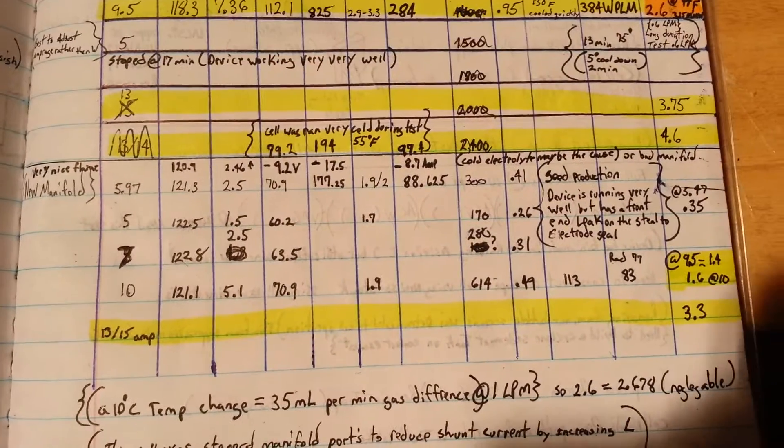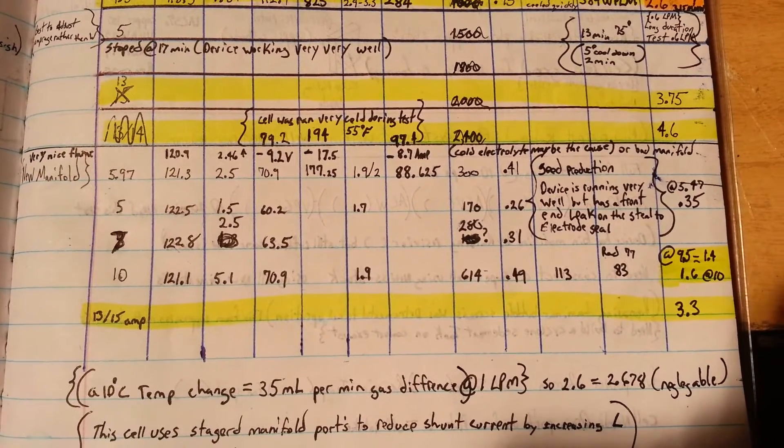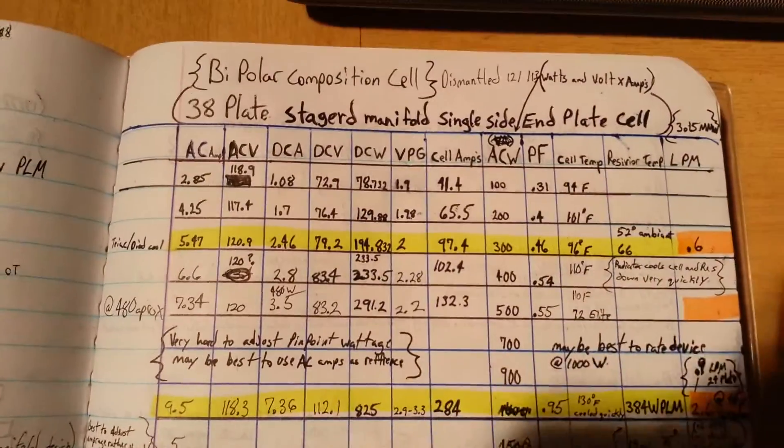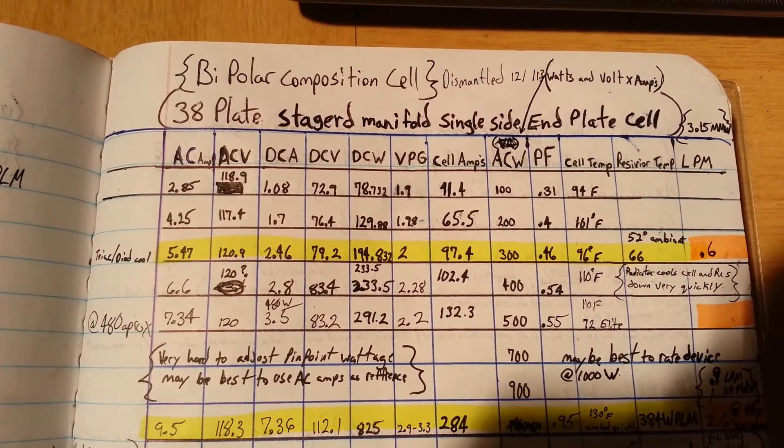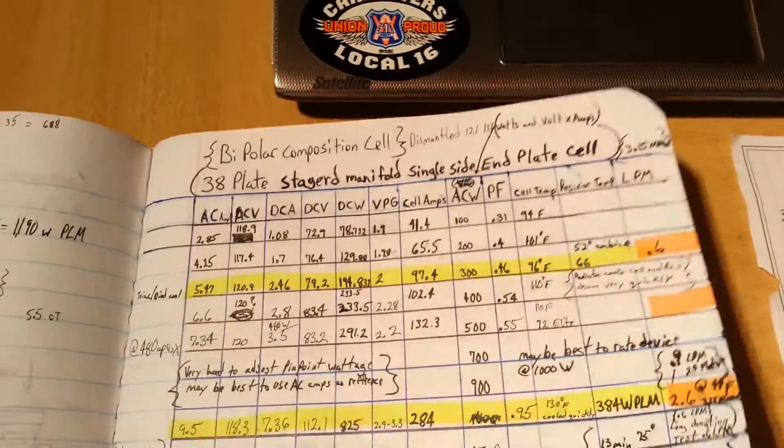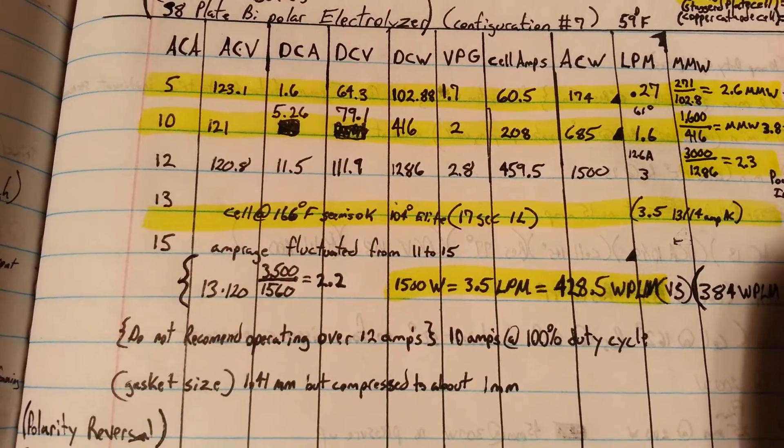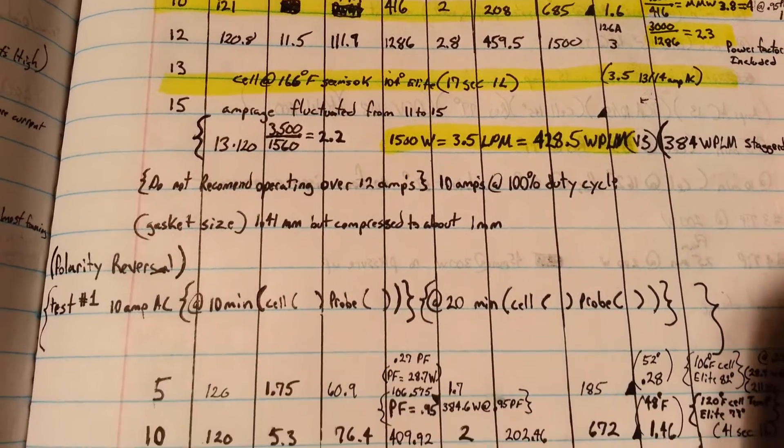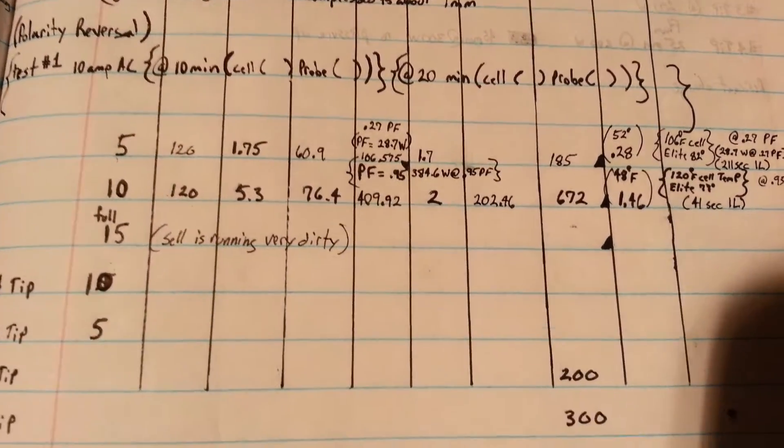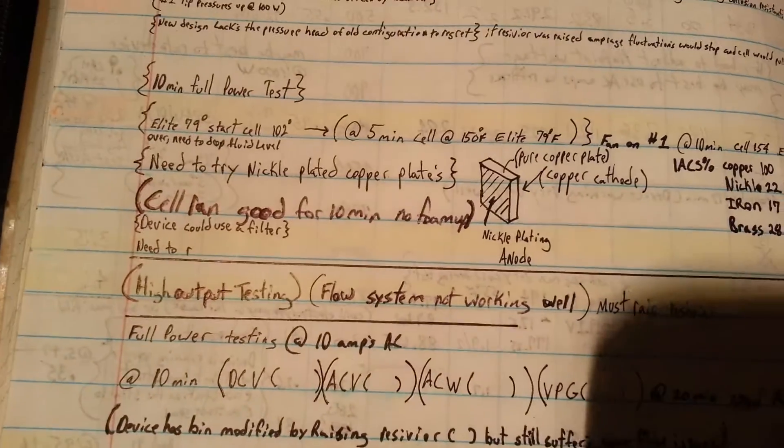If you wanted to pause this and look at some of the data I got from this particular cell configuration, and here's the second page. If you need to know what any of this stands for just let me know. I'm just doing this for a video archive for my own records.